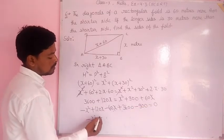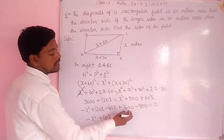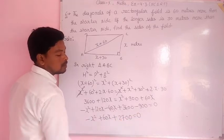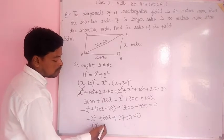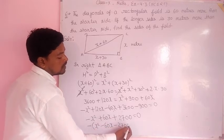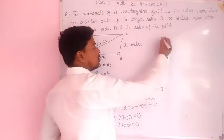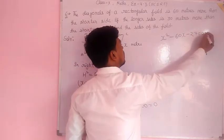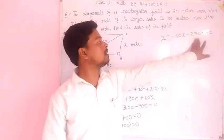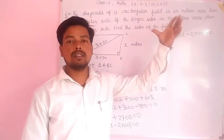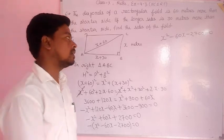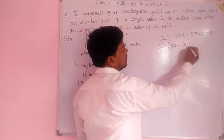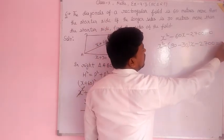X squared minus X squared, 120X minus 60X, and 3600 minus 900 equal to 0. This gives 60X minus 2700 equal to 0. I need two numbers whose product is 2700 and difference is 60. That's 90 and 30.